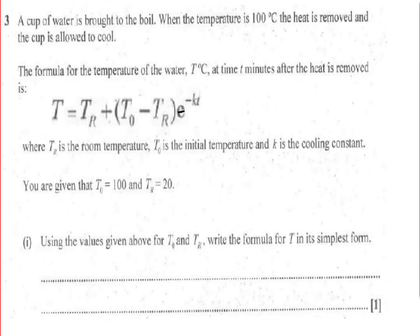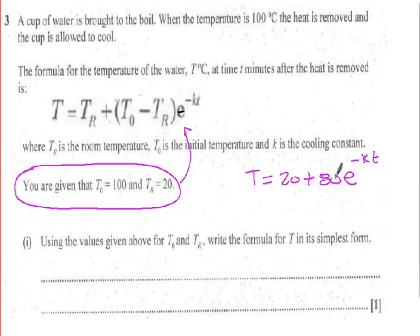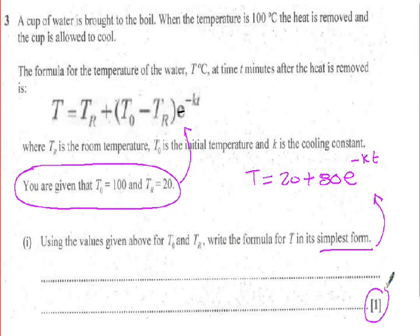Question three moves into the logs and exponentials topic area. We're given a quite complicated equation, but if you read the question carefully it gives you values that simplify it. Putting the given numbers in, it simplifies to T = 220 + 80e^(−kt). That's the exponential equation you'll use for the rest of the calculations. Part one says: using the given values, write the formula in its simplest form — one mark for substituting the numbers.